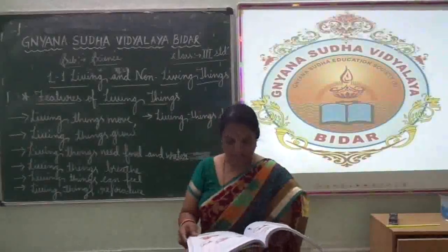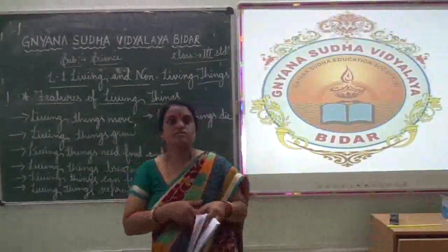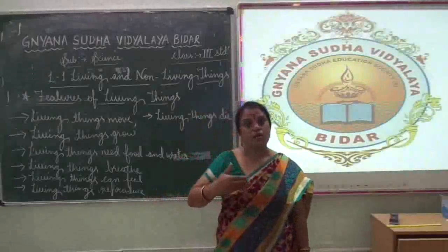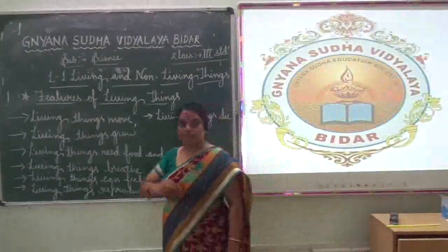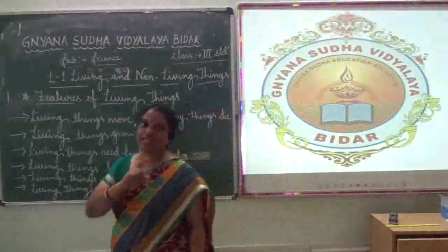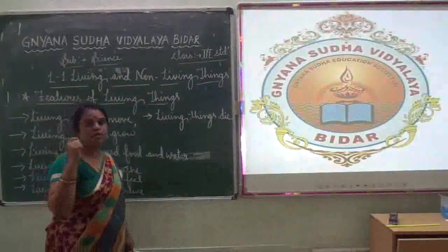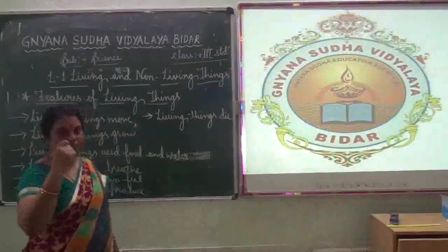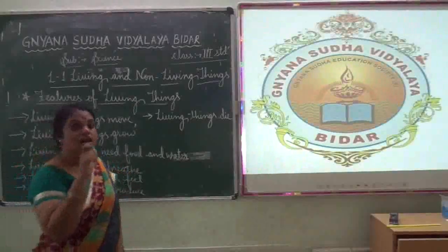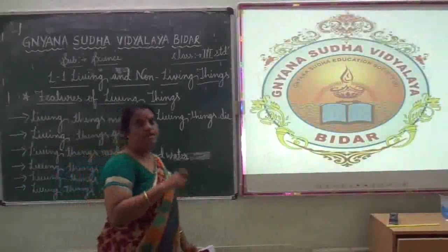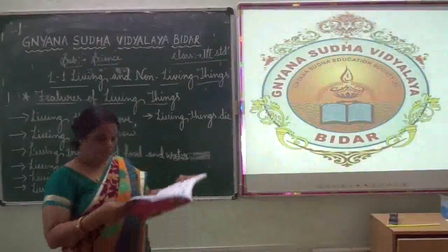Non-green plants get their food from decaying substances. So only green-colored plants can make their own food. Why? Because they have a green-color pigment called chlorophyll. With the help of chlorophyll, they can make their own food.